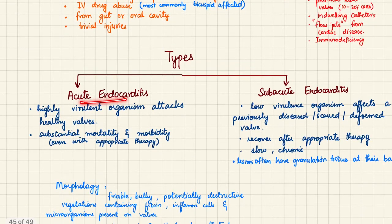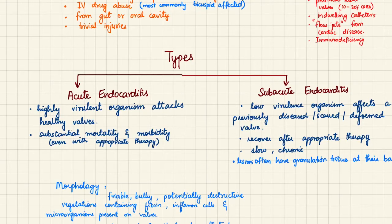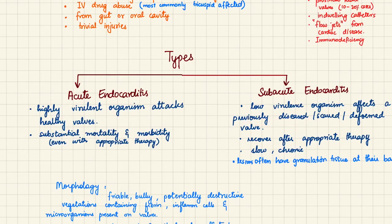There are two types of endocarditis: acute and subacute. Acute endocarditis is caused by a highly virulent organism that attacks healthy valves, with substantial mortality and morbidity even with appropriate antibiotic therapy or surgery. Subacute endocarditis is a slow process caused by a low virulence organism that always affects a previously damaged, diseased, or scarred valve.